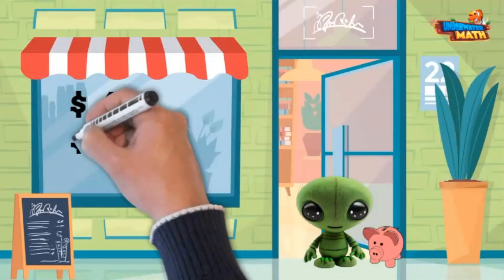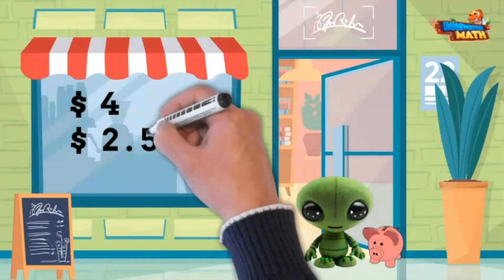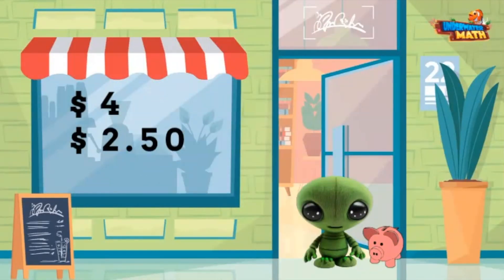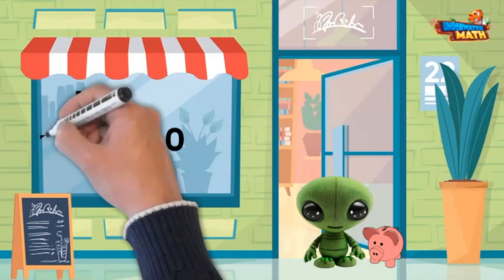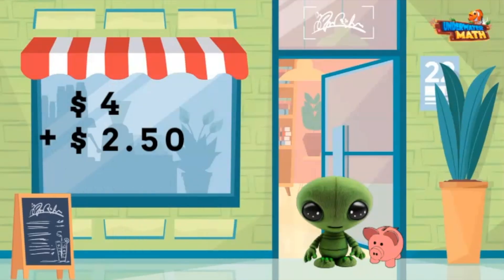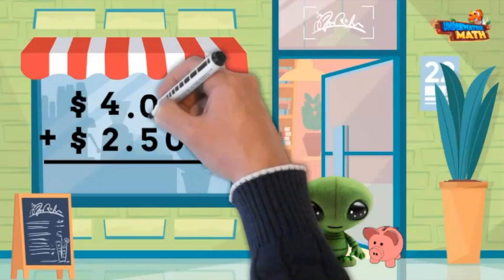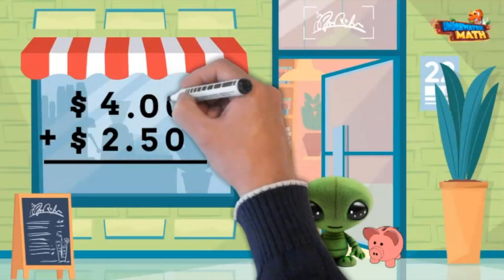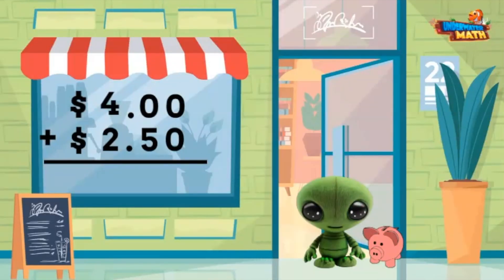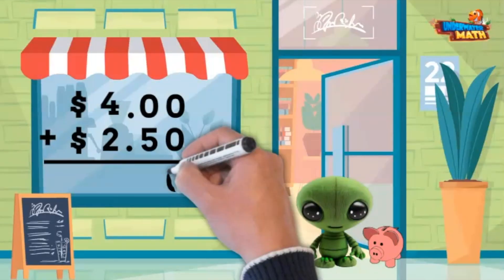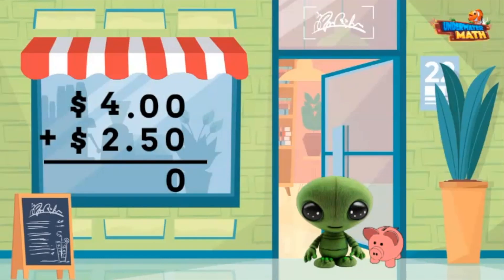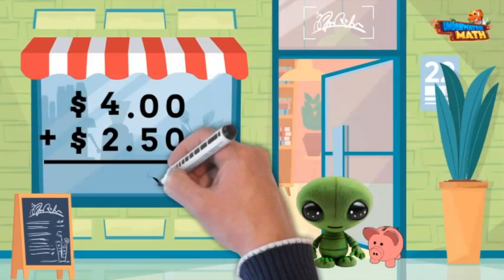I have four dollars in my piggy bank. I just earned two dollars and 50 cents from completing my weekly chores. How much money do I have now in total? Let's use addition to add the two amounts together: four dollars plus two dollars and 50 cents. I like to add zeros to help. Zero plus zero is zero, zero plus five is five, four plus two is six.